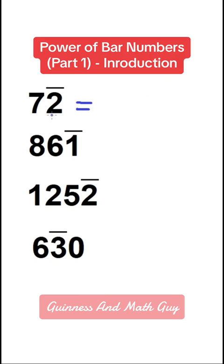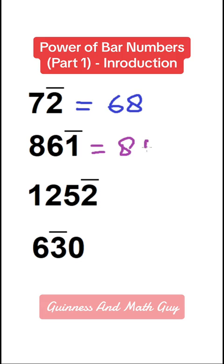7 bar 2 means 68, because it's 70 minus 2. And 8 6 bar 1 means 8.59. Why? Because 6 bar 1 means 60 minus 1, and 8 remains unchanged.